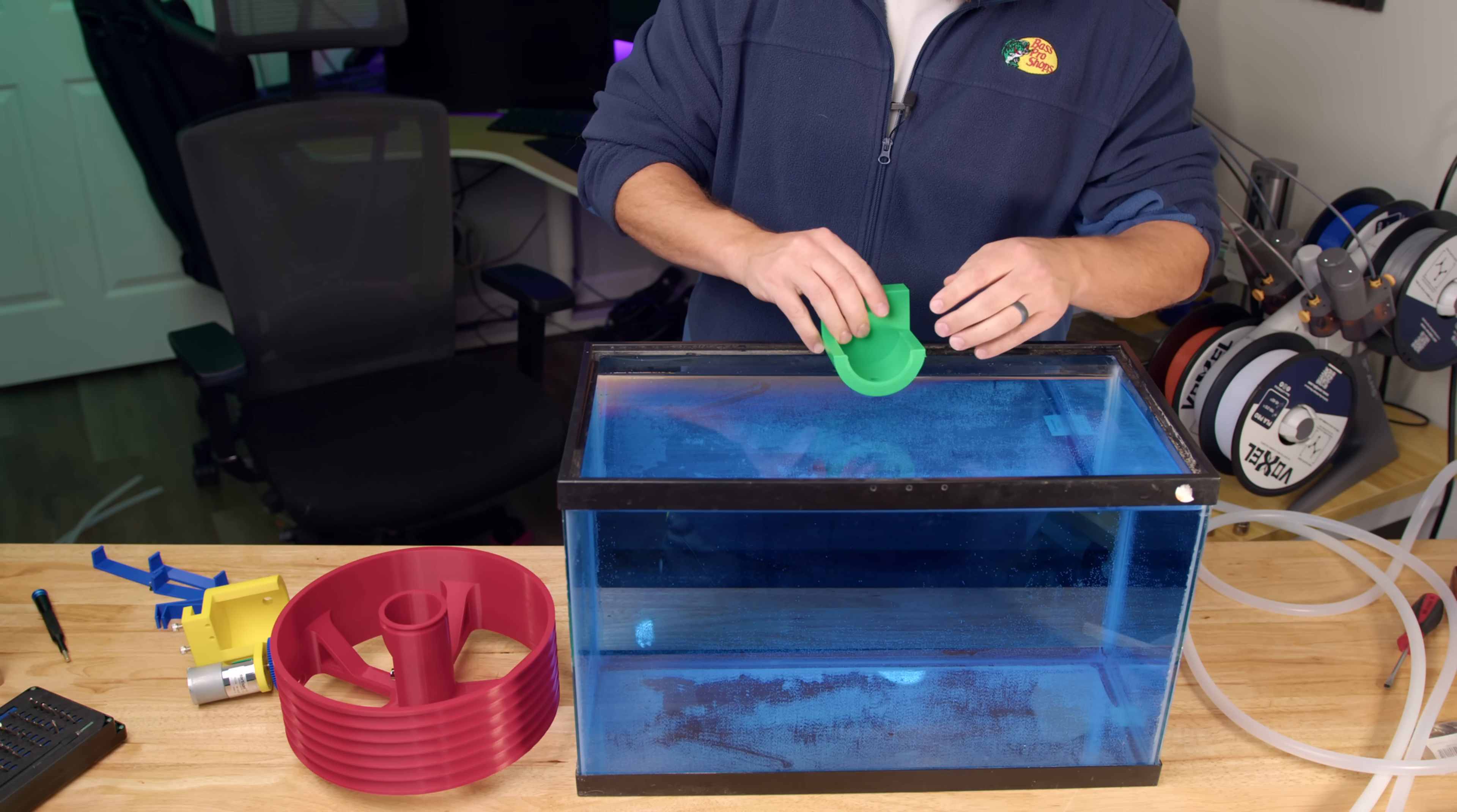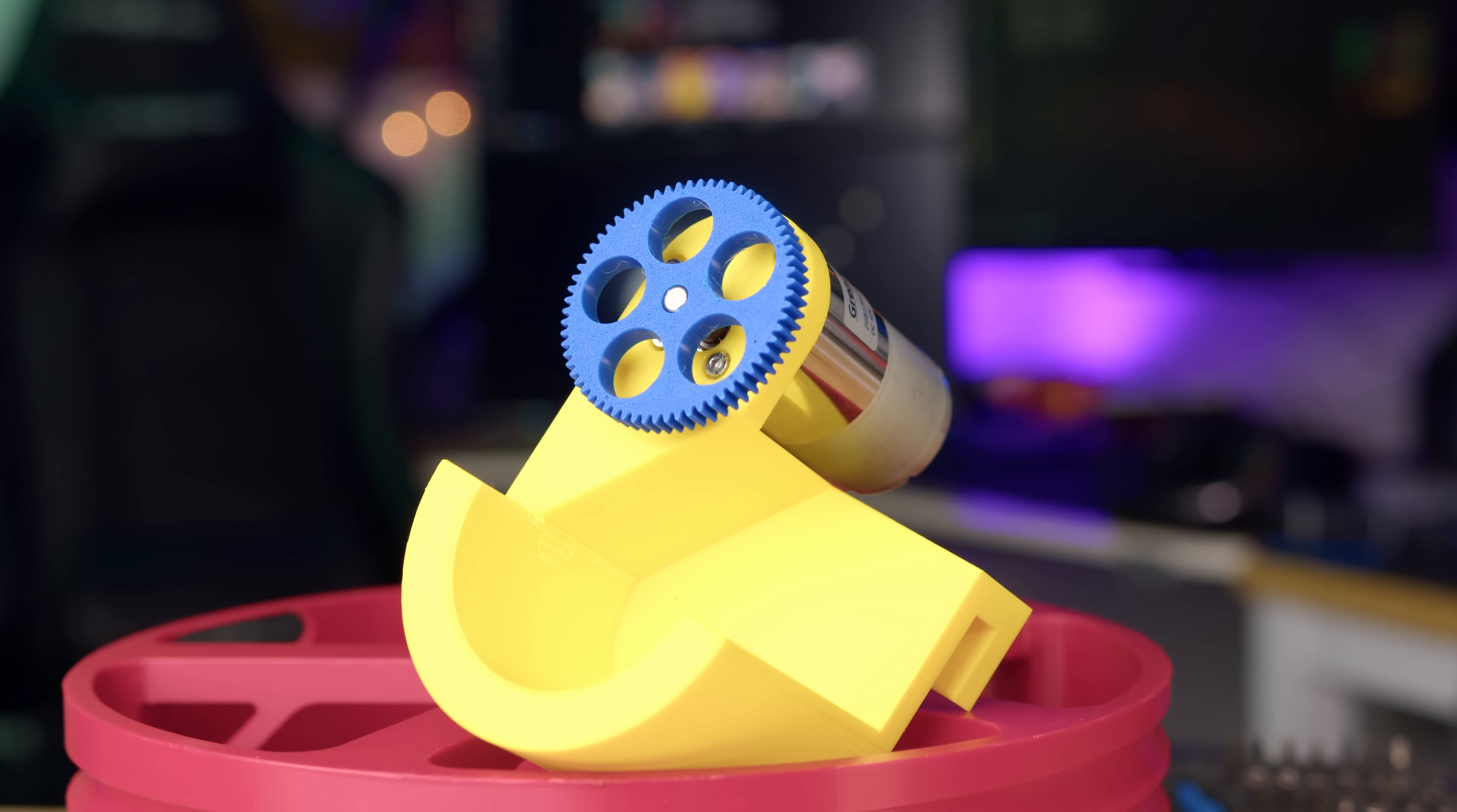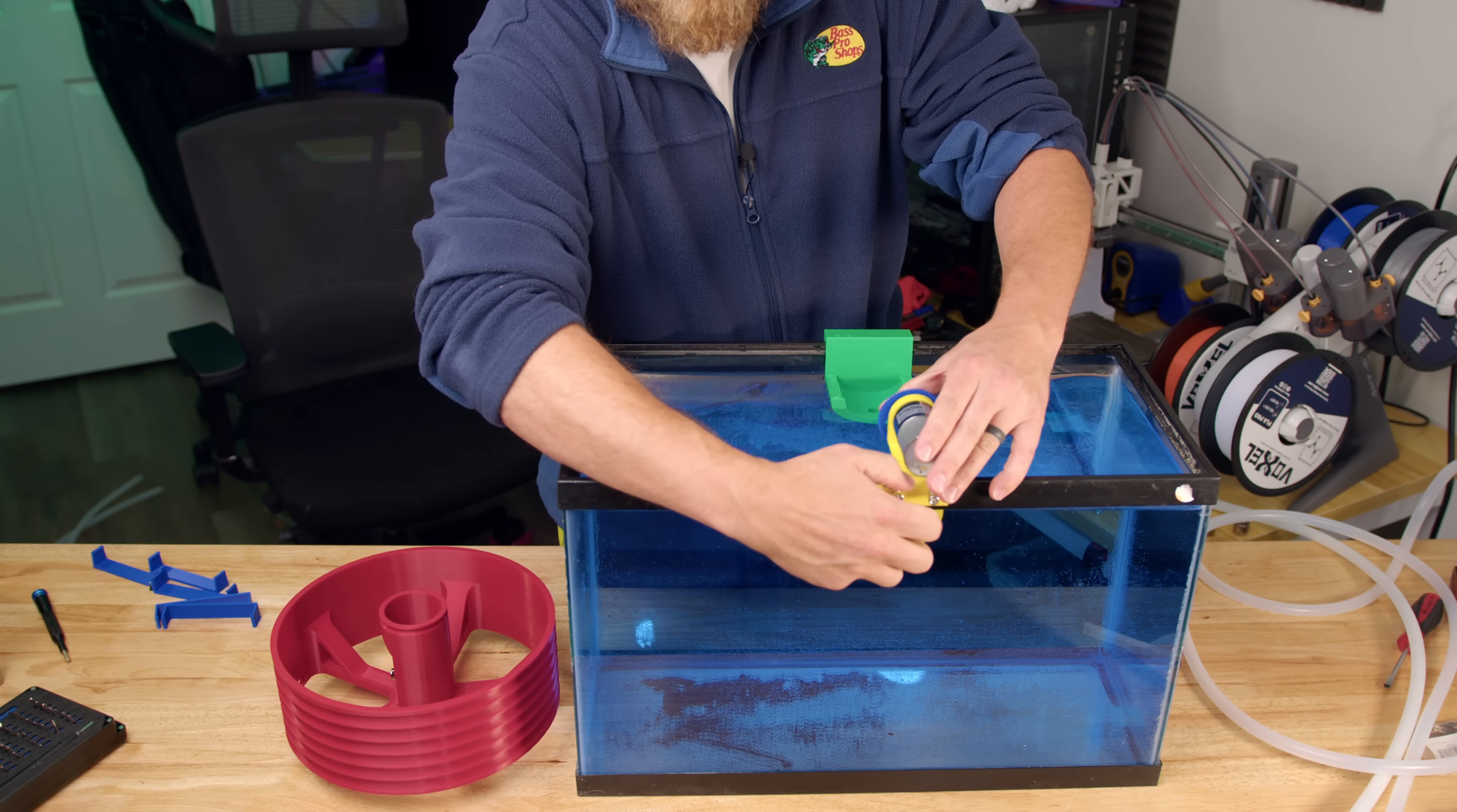To hold the drum I have these two brackets that are going to just sit on the edge of this fish tank. This one has a geared motor on it that's going to drive our drum around, and then these screws are just here to tighten it down, make sure it doesn't slide around or hopefully keep it somewhat level.